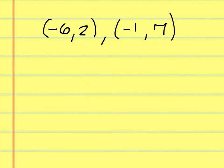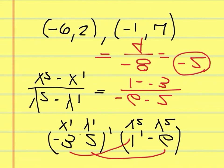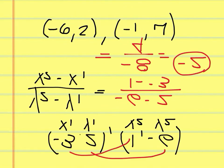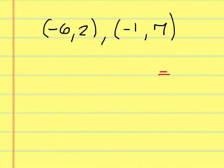To find the slope given these two points, you'll do 7 minus 2 over negative 1 minus negative 6. So that would be 5 over 5, which comes out to be 1.